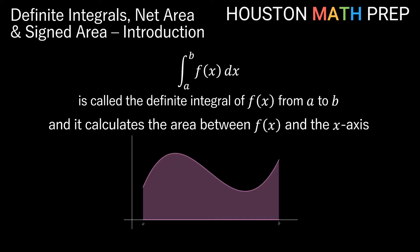Houston Math Prep here for our video on definite integrals. This expression here is called the definite integral of the function f of x. From a to b, it calculates the area between the function and the axis on that interval. We call a the lower bound of the integral and b the upper bound. This tells us we're finding the area between x equals a and x equals b, between the function and the axis.